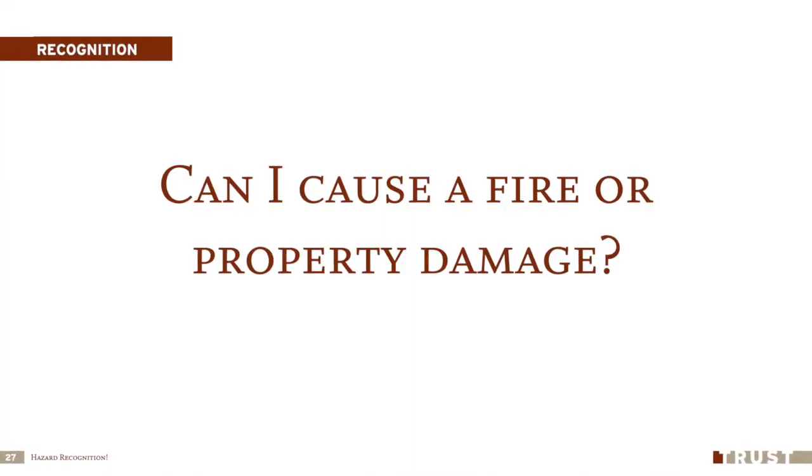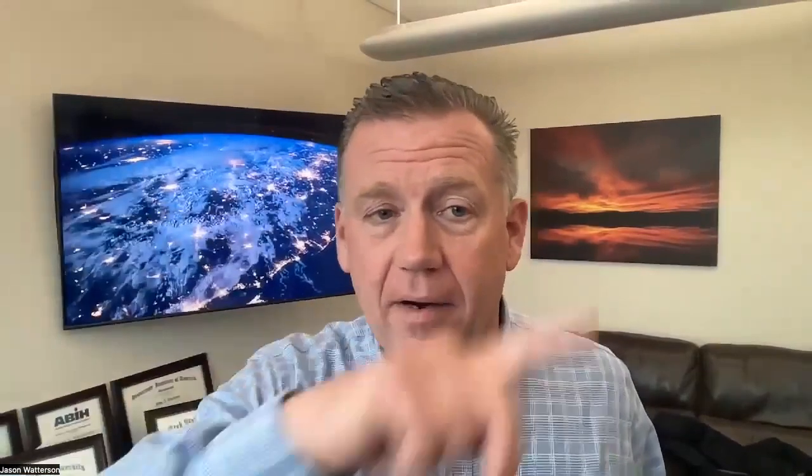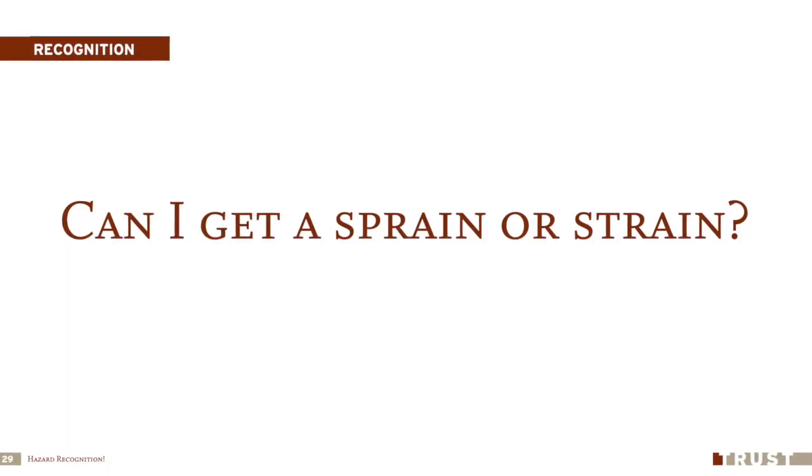Can I cause a fire or property damage? This is an area we've talked about recently. Hot work permits are an essential way to prevent fires — they put together a program that forces me to look at what the risks are, remove combustible materials, ensure I have extinguishing materials there — a fire extinguisher, a hose — and do a fire watch. All of these things are parts of fire prevention, but it starts with the recognition that I could start a fire by the type of work I'm doing and then taking appropriate action from there.